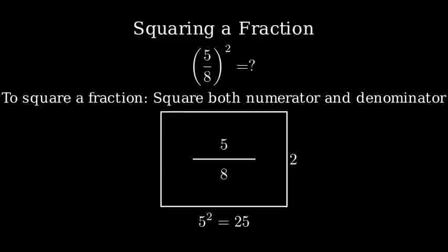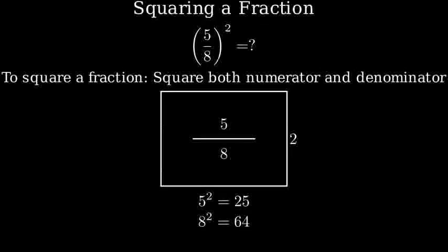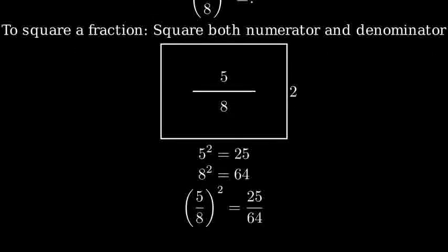First we square the numerator. 5 squared equals 25. Then we square the denominator. 8 squared equals 64. Therefore, 5 eighths squared equals 25 over 64.